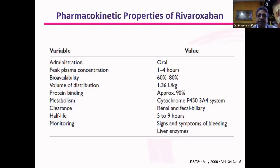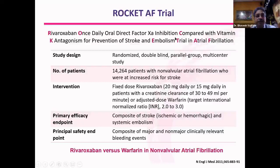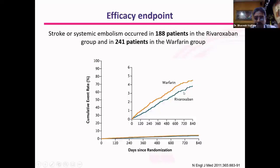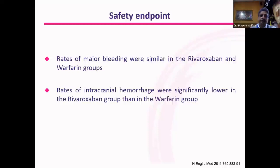The reason rivaroxaban came into being was the ROCKET AF trial — a nearly ten-year-old trial where rivaroxaban was tried against warfarin and was found to be non-inferior. It reduced stroke and systemic embolization compared to warfarin, with almost a 60% relative reduction in stroke and systemic embolization. At the same time, it did not have major bleeding, and hence it was accepted and approved as an alternative to warfarin in stroke prevention for atrial fibrillation.